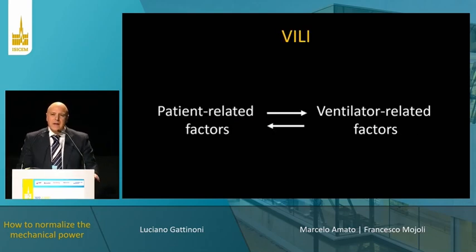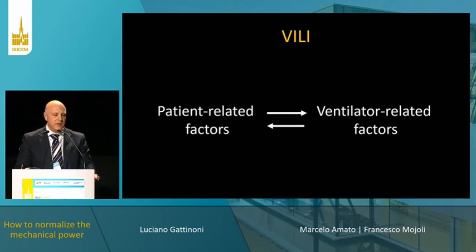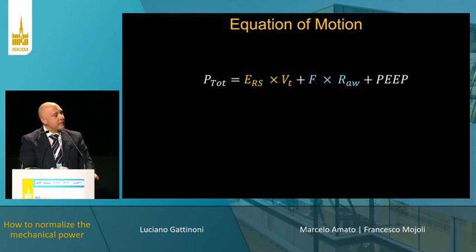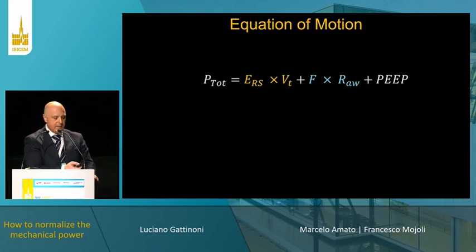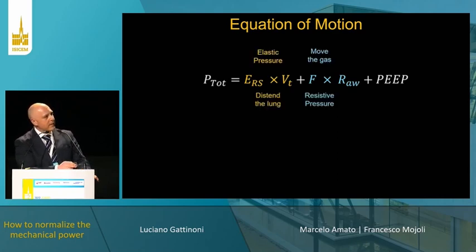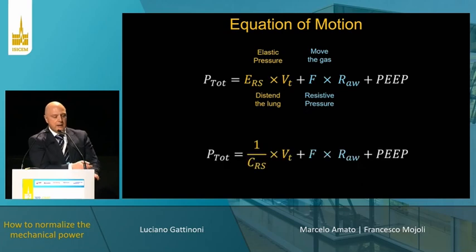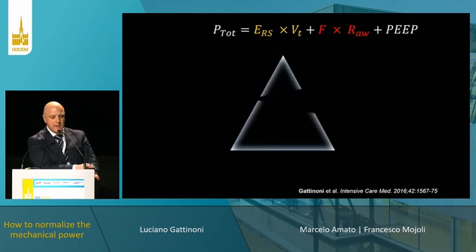Essentially I'm going to talk about the idea that, as we know, ventilator-induced lung injuries involve the relationship between patient-related factors and ventilator-related factors. When we think about the pressure we apply through mechanical ventilation to the lung, we start from the equation of motion. The total pressure is the elastance of the respiratory system times the tidal volume, then flow times resistance plus PEEP. Another way of looking at it is one over compliance, which is essentially the same as elastance.